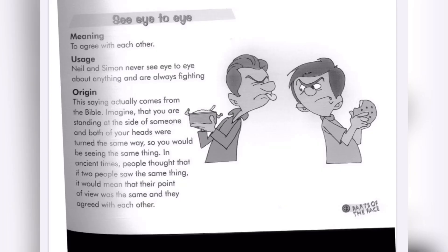Your new idiom is 'see eye to eye.' The meaning is to agree with each other. For example: 'Neil and Simon never see eye to eye about anything and are always fighting.'